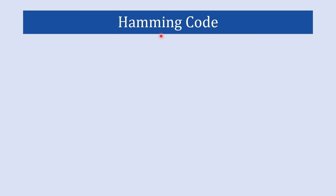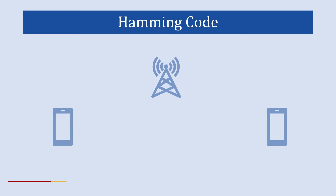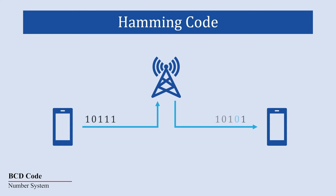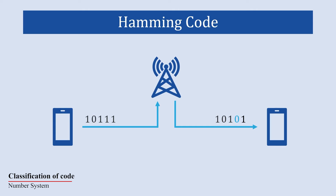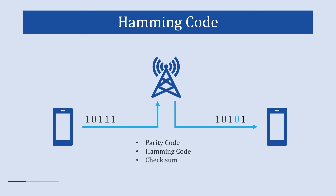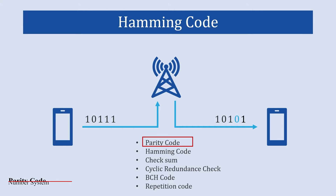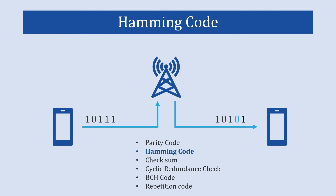In this video we are going to learn about Hamming code. When we send data, there is a possibility that due to noise our data gets distorted. In order to detect errors in a received message we have various methods. Previously we have seen parity code, and in this video we are going to learn Hamming code. In upcoming videos we will learn other methods.